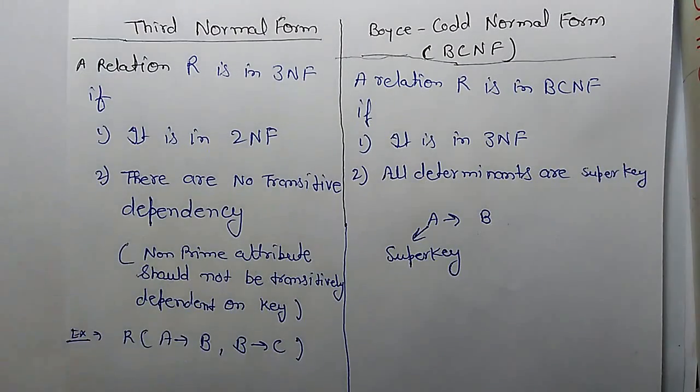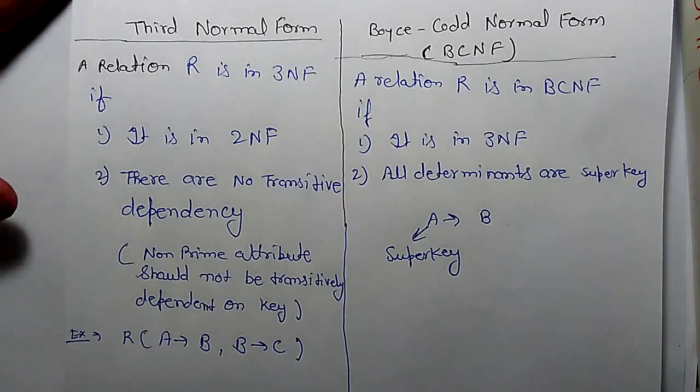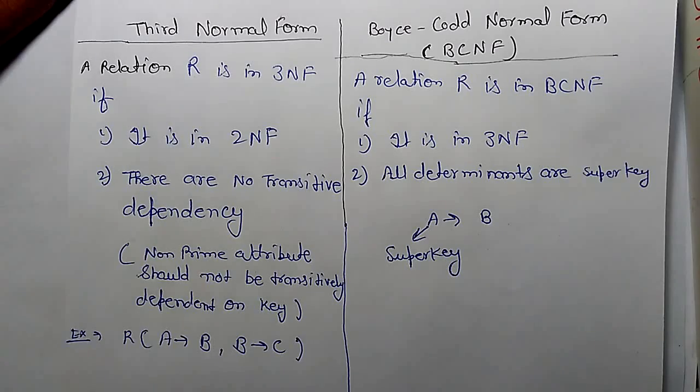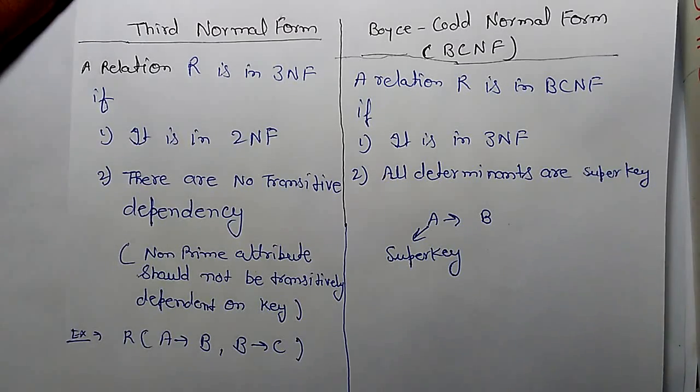Hi, today we are going to learn third normal form and BCNF. A relation R is in 3NF if it is in 2NF and there are no transitive dependency. What is meaning of no transitive dependency? It means if non-prime attributes are at right side, so left side should be a super key.